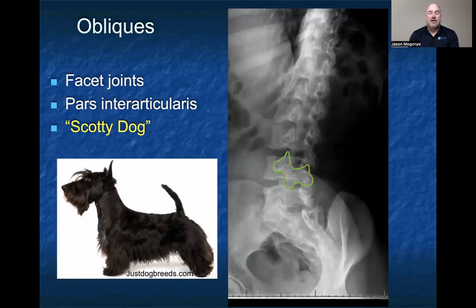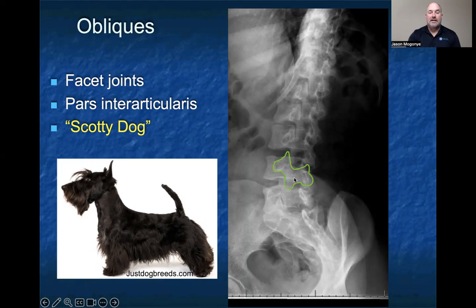When identifying the Scotty dog: the pedicle is the head of the dog, the superior articulating process is the ear, the inferior articulating process is the front leg, and the lamina and the rest of the posterior elements make up the backside of the dog.